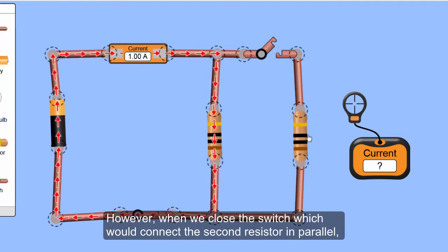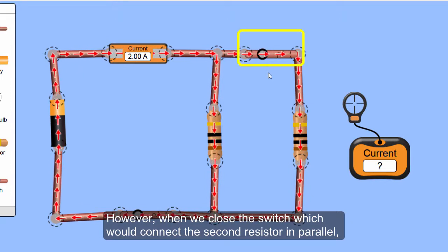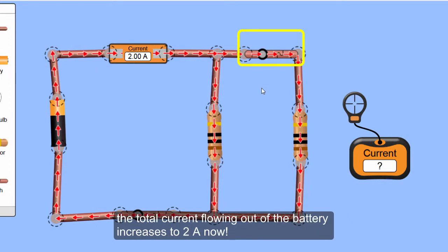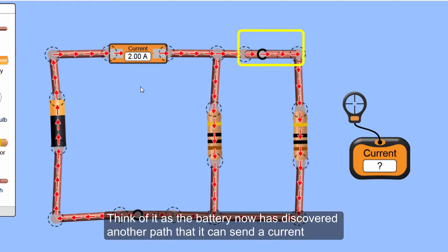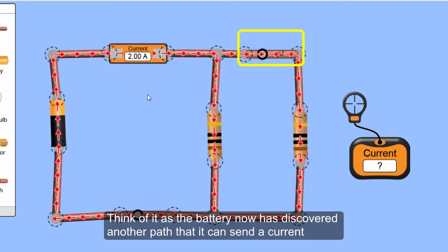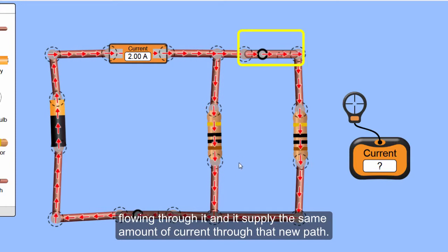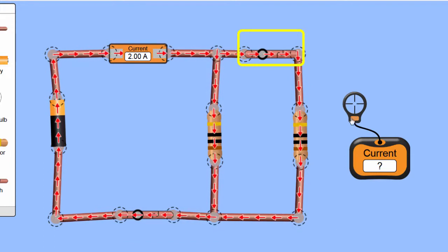However, when we close the switch, which will connect the second resistor in parallel, the total current from the battery, as you notice, is actually 2 now. So think of it as the battery has now discovered another path that it can send current flowing through, and it will supply the same amount of current flowing through that path.